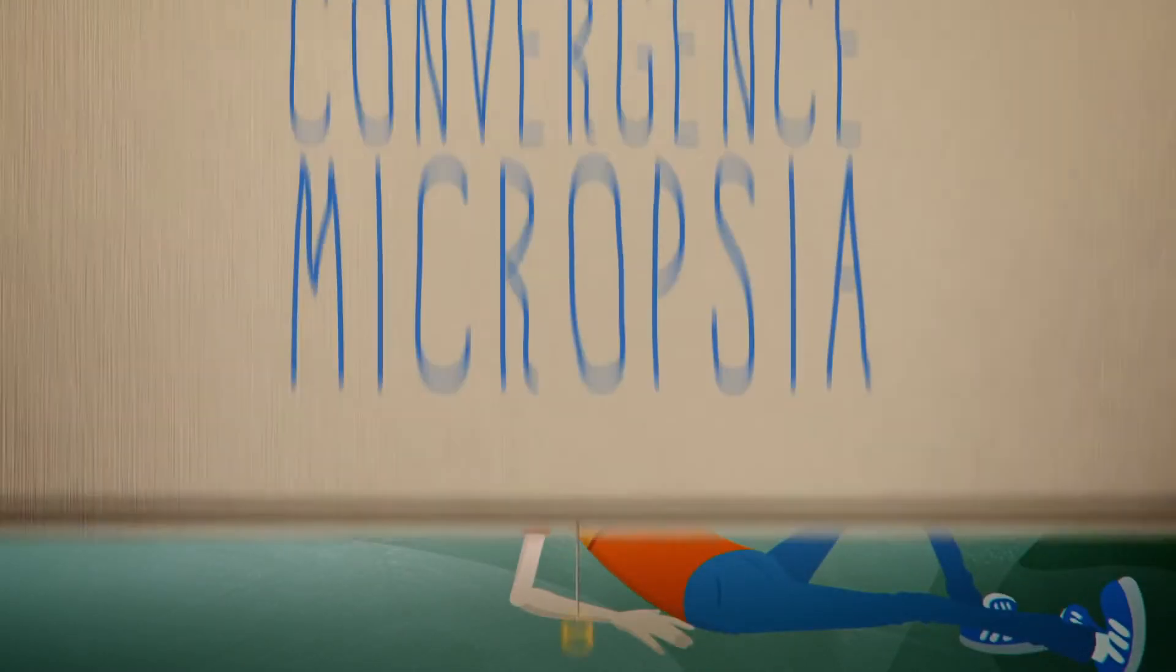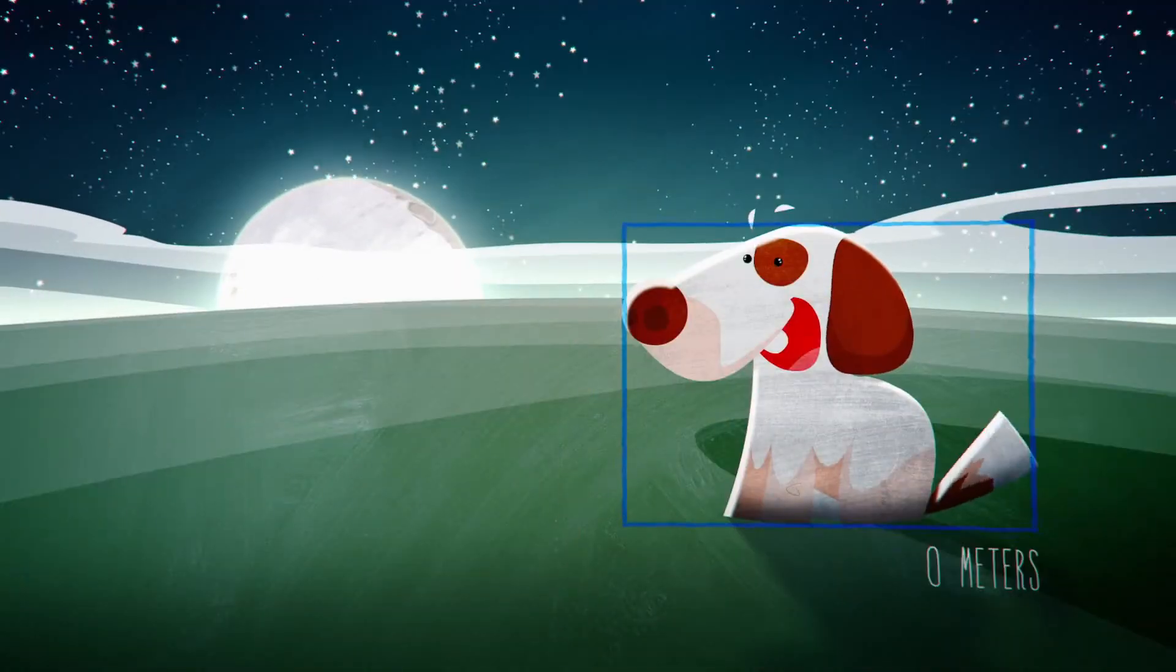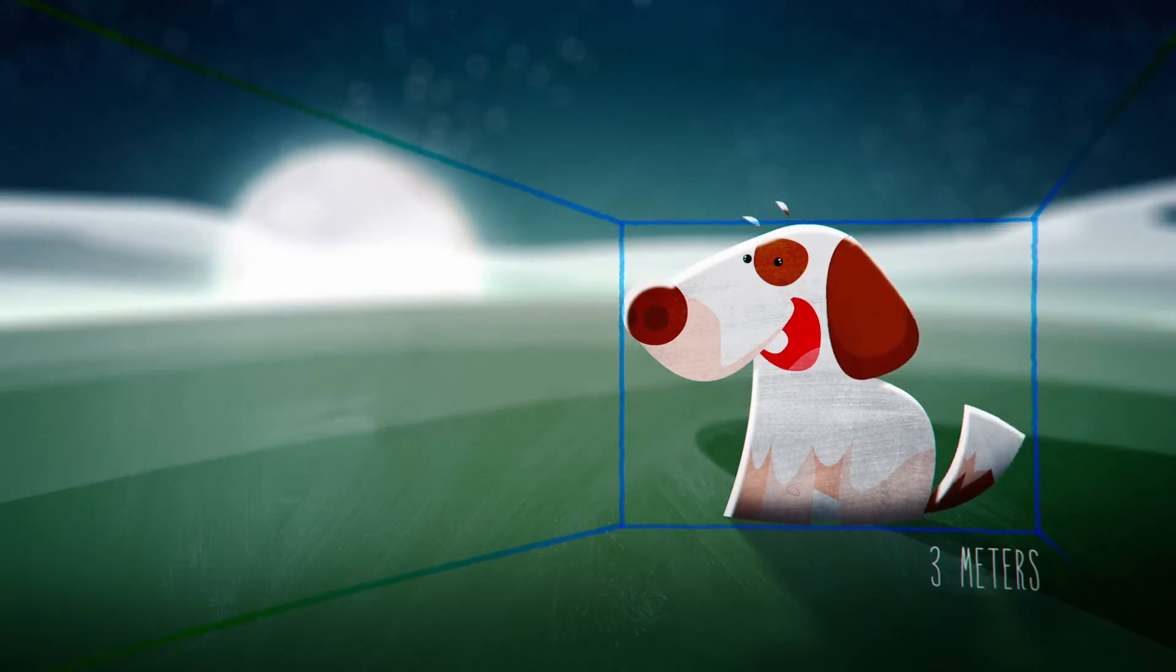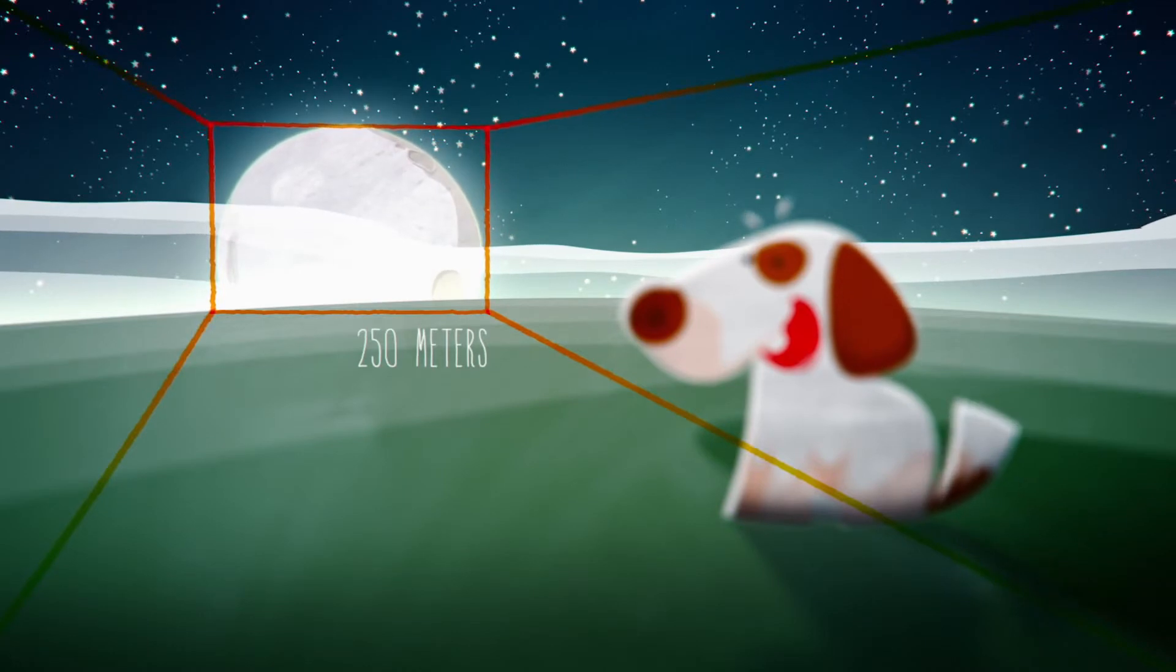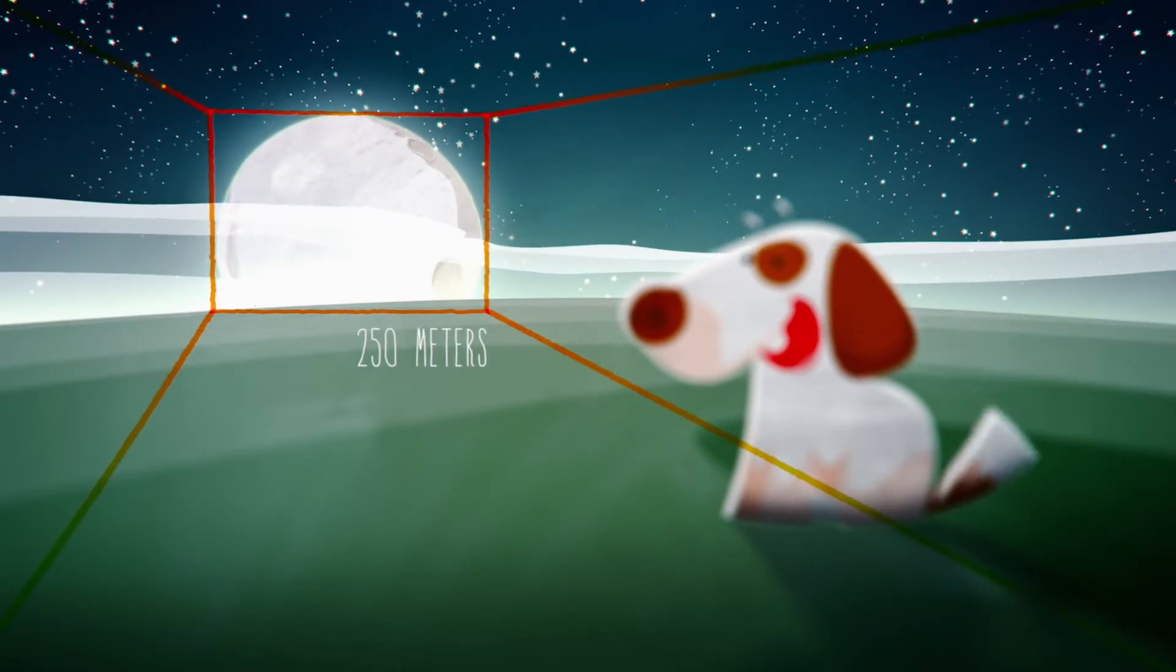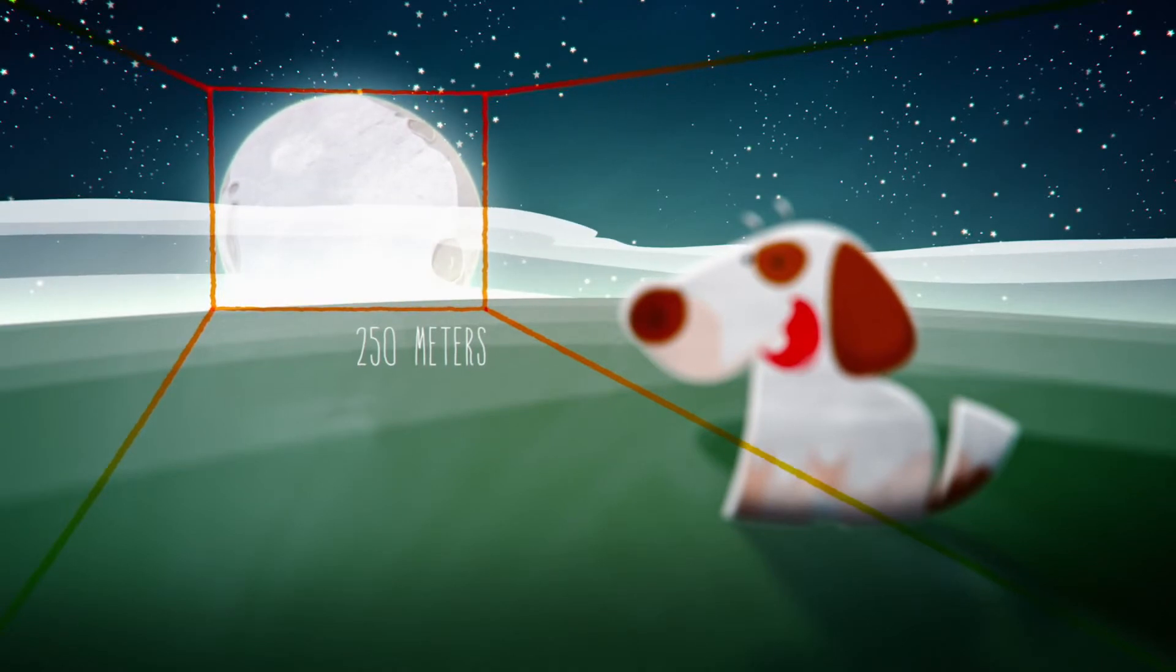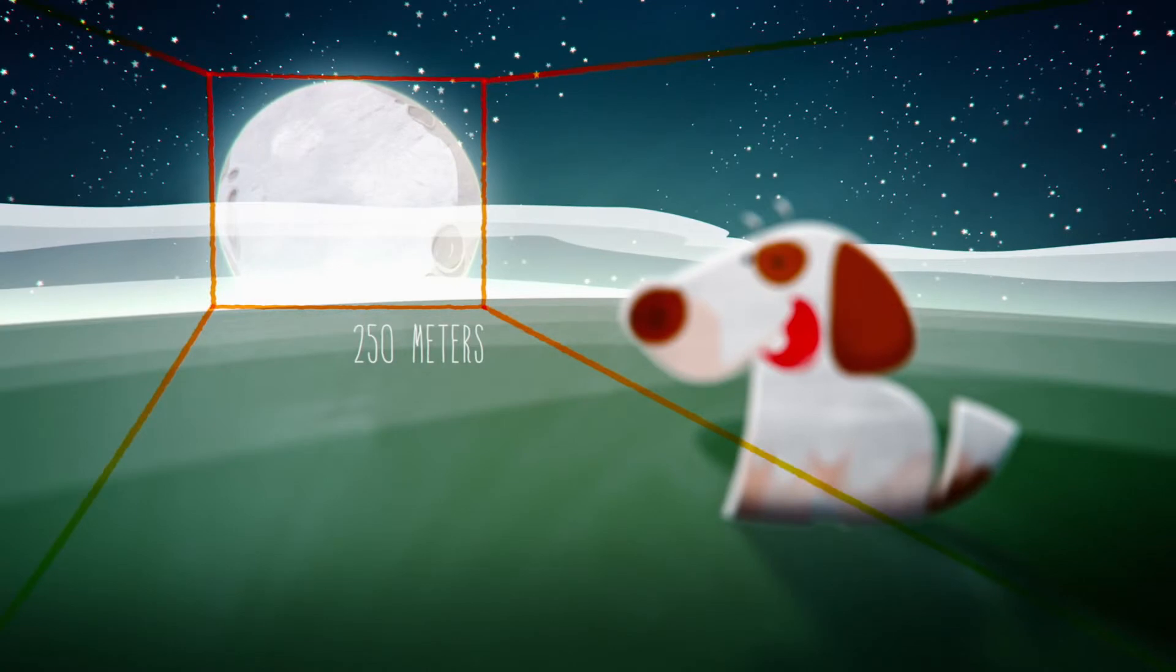One of the most promising explanations today is known as convergence micropsia. Our brains judge the distance to objects and their apparent size by the focus of our eyes. When looking at the horizon, your eyes focus far off into the distance so your brain knows you're looking far away. The moon appears a certain size. Your brain thinks it's far away, which it is, so you naturally conclude the moon must be big.